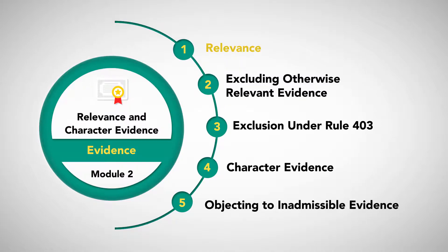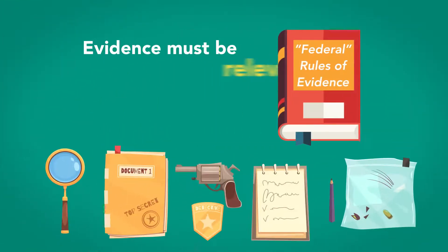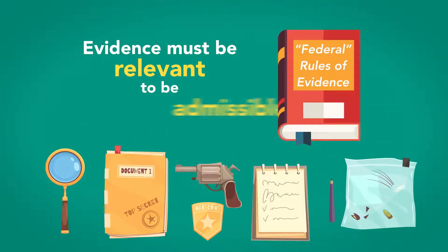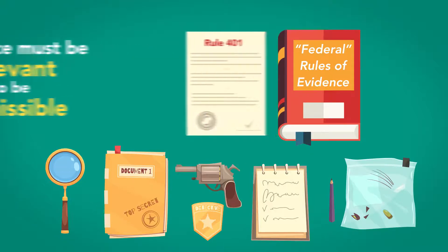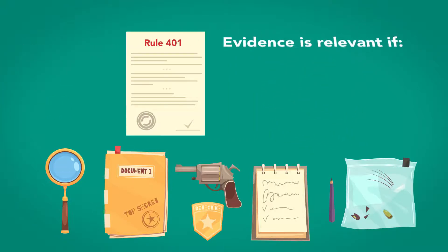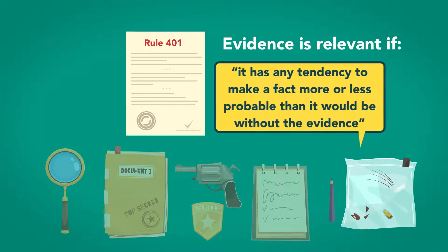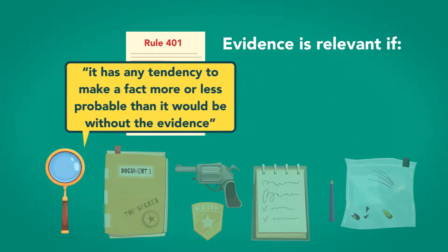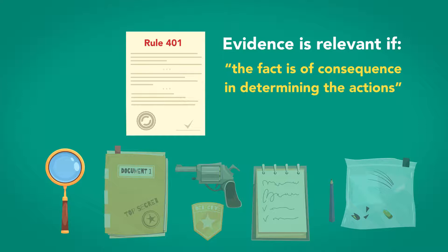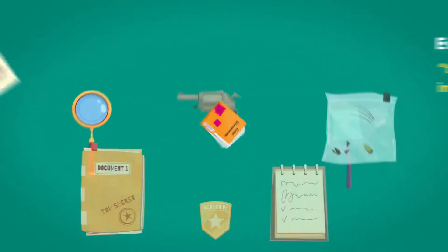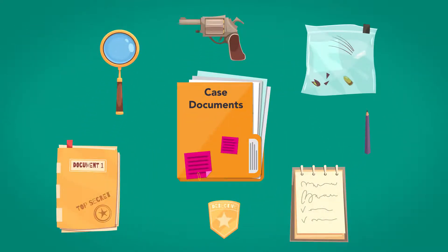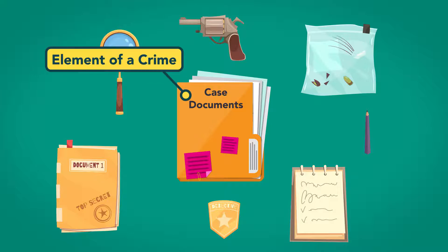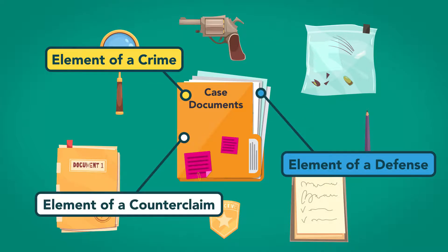Relevance. A fundamental rule of evidence is that evidence must be relevant to be admissible. Federal Rule of Evidence 401 stipulates that evidence is relevant if it has any tendency to make a fact more or less probable than it would be without the evidence, and if the fact is of consequence in determining the action. The evidence can be relevant to any part of the case, such as an element of a crime, a defense, or a counterclaim.